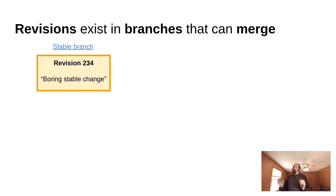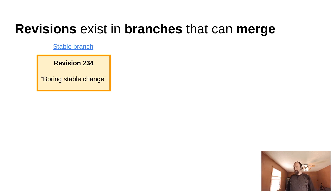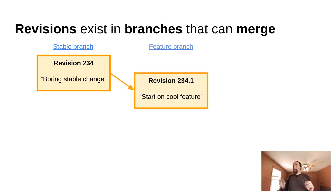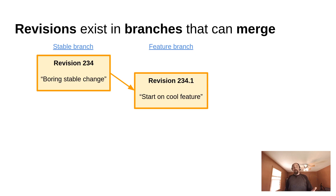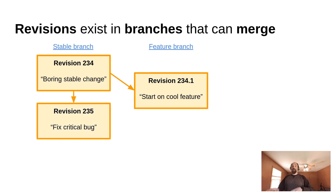Revisions also exist in branches that can merge. The idea of branching and merging is kind of advanced — we're going to be digging really deep into it in a later part of the series. But at a super high level, let's say you have a stable branch, which is the version of your game that's been released to players. The current revision on that branch is revision 234. Now you want to start working on some cool new feature that's going to take a while. So rather than working on it right in the stable branch, you can make a separate feature branch just for that new feature. You start working on it, get kind of far but not all the way done, so you commit that set of changes. Then let's say your players find a really critical bug — it's breaking the game for 10% of your players — so you need to fix it in your stable branch and push that out to players.